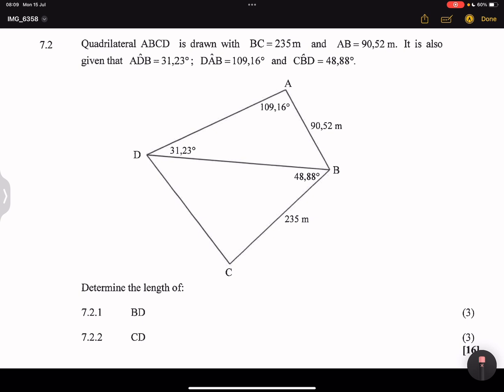Now notice, what do we already have? We've got side BD, which we just calculated now. So we've got line DB. Now notice, we're looking for the other side which is CD. And what do we have on that triangle? We've got two sides and the angle in between. What did I say about two sides and an included angle? That definitely calls for the cosine rule.